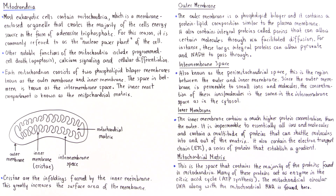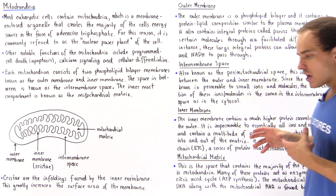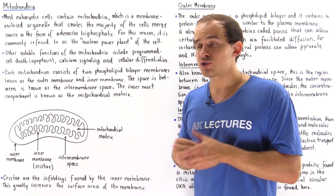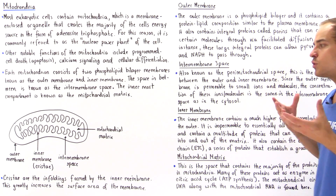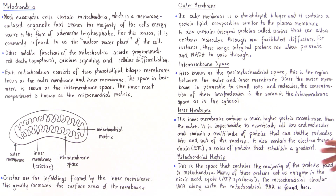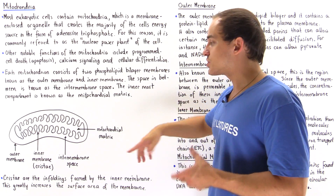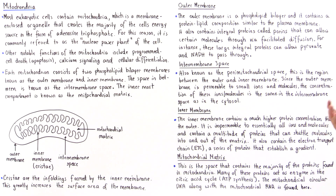The Krebs cycle involves the breakdown of pyruvate using acetyl coenzyme A and other molecules to produce ATP molecules, with the help of the electron transport chain. The mitochondrial matrix also contains mitochondrial DNA and mitochondrial RNA.